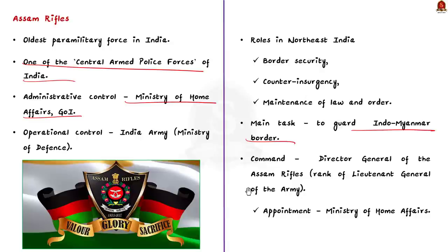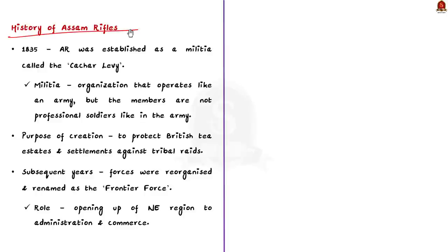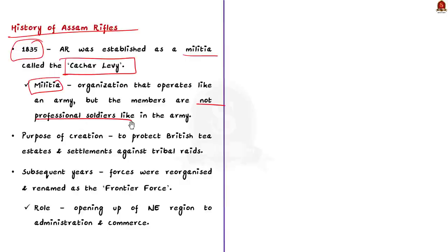Around 80% of the officers of Assam Rifles come from the Army and the remaining officers come from the Assam Rifles cadre itself. The Assam Rifles is commanded by the Director General, who is of the rank of Lieutenant General of the Army, and is appointed by the Ministry of Home Affairs. The Assam Rifles was established in 1835 as a militia called the Cachar Levy. The term militia refers to an organization that operates like an army, but the members are not professional soldiers. The force was formed primarily to protect British tea estates and their settlements against tribal raids.